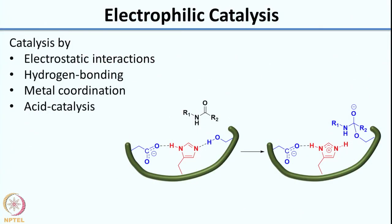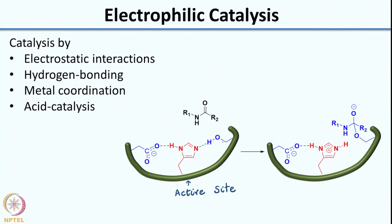I will give you an example from biology — an example from an enzyme. To simplify things, the entire enzyme is not shown. Shown in green is what is called the active site of the enzyme. In enzymes you have the entire protein structure and there is a pocket within the enzyme called the active site where the catalysis actually takes place. In the active site you have different functional groups.